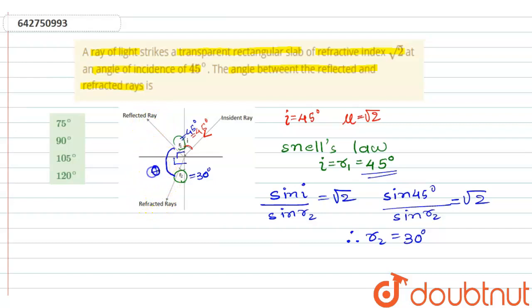This we call theta. Theta will be 90 minus 45 plus 90 minus 30. So theta will be 90 minus 45, 45 plus 60, that is 105 degrees.